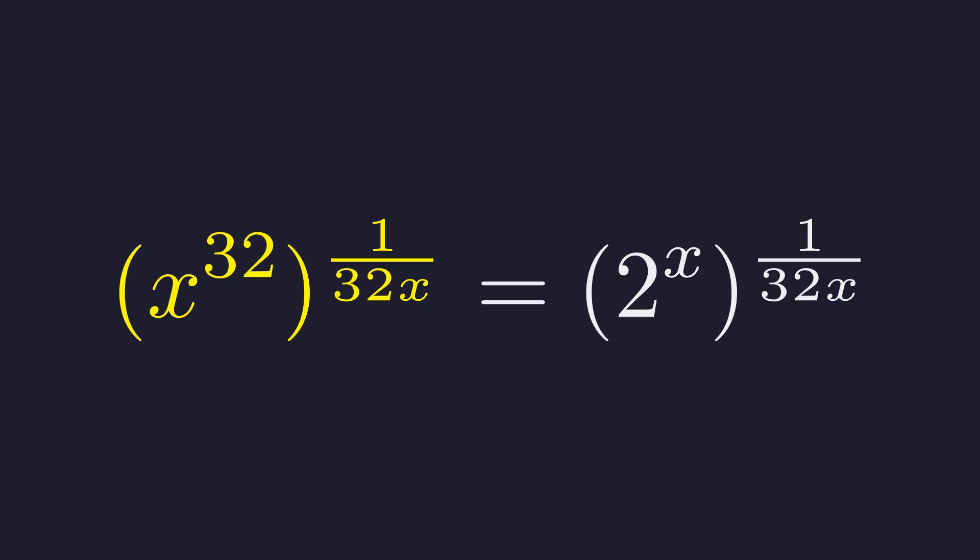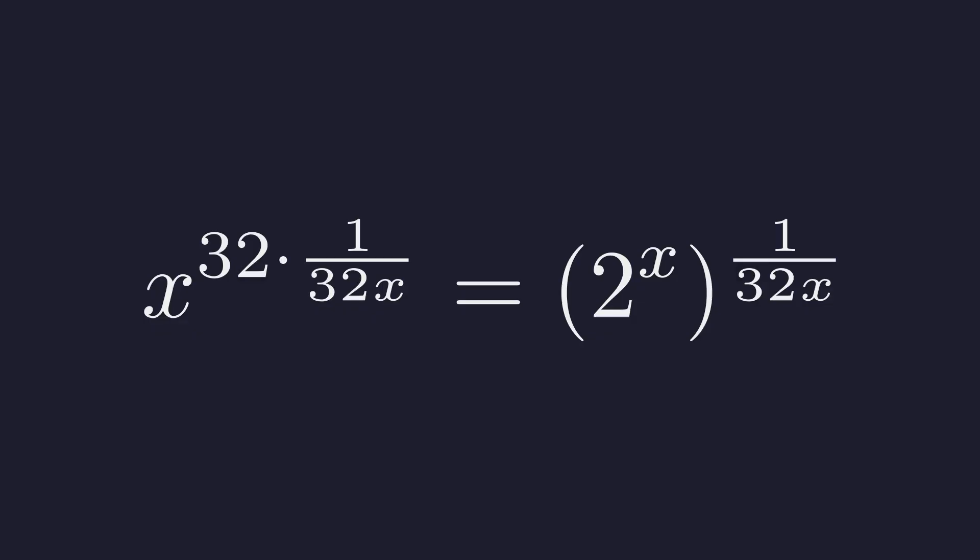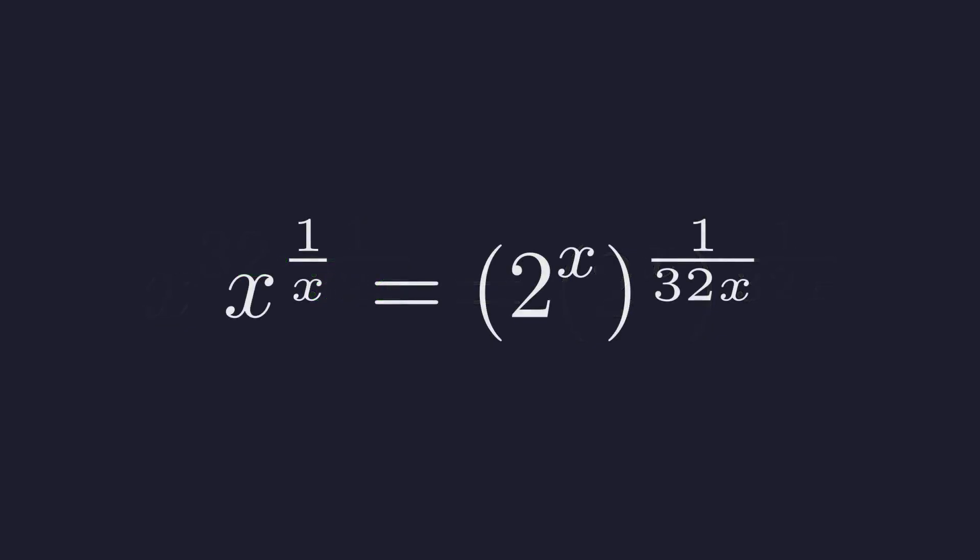On the left side we can apply the power rule. A power raised to a power becomes the base raised to the product of those exponents. So the exponent becomes 32 times 1 over 32x. Notice how the 32 in the numerator cancels with the 32 in the denominator, and we're left with this clean form: x to the power of 1 over x.